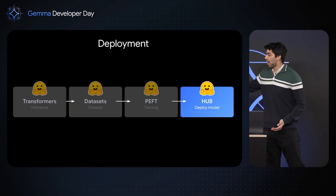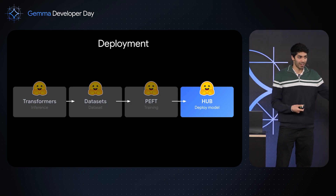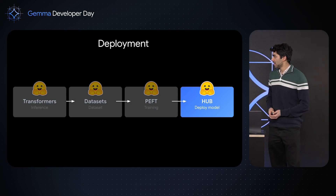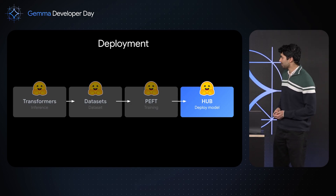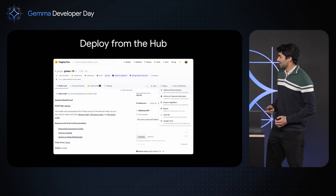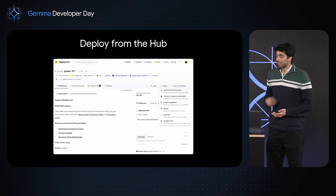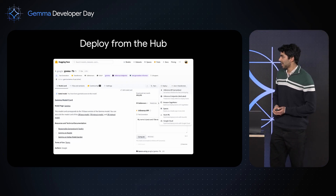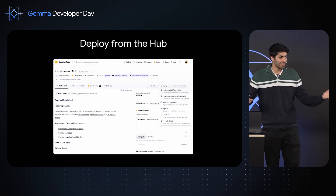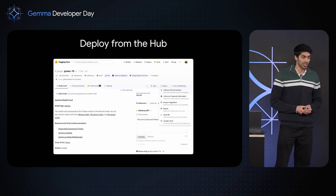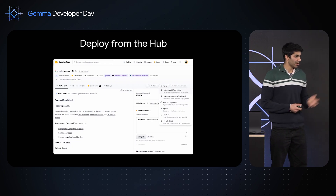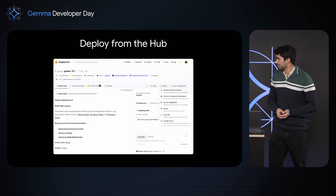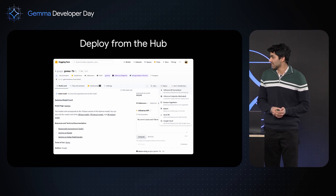So now we've loaded a model for inference, loaded a dataset, and fine-tuned our model. We're now at the stage where we can deploy it and share it with the rest of the community, and to do this we use the Hugging Face Hub. As we saw, the Gemma models all live on the Hub. If you train a model in the Hugging Face ecosystem, it gets pushed to the Hub so you can share it with the community. You get a page with a model card covering training and evaluation information, as well as code snippets for using it in Transformers and other libraries like Llama.cpp.